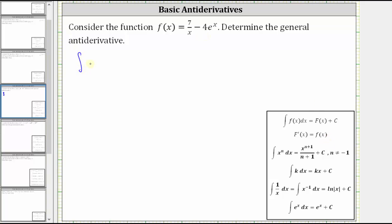So we have the integral of seven divided by X minus four e to the X. When we integrate seven divided by X, we need to be careful. Seven divided by X is equivalent to seven times X to the power of negative one.